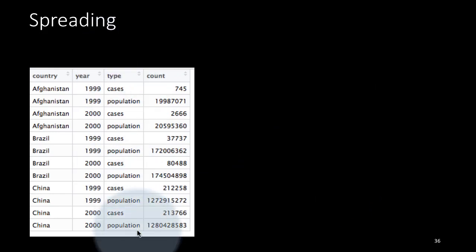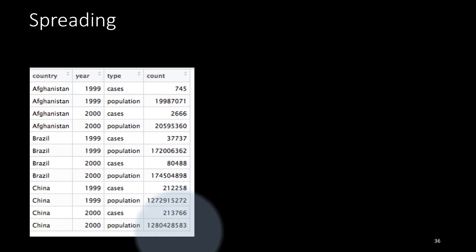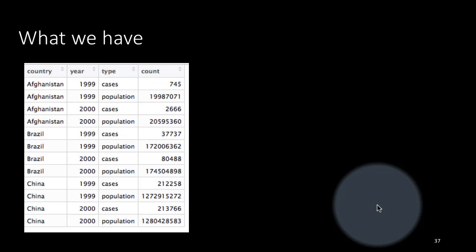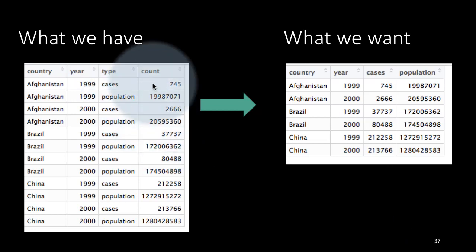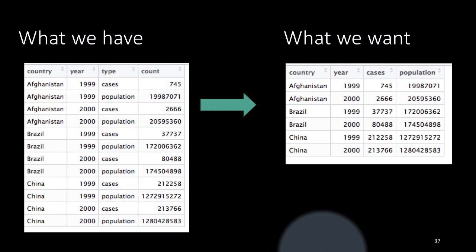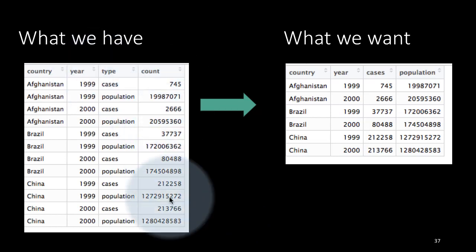Here we are taking an example with a column called type and a column called count. We would ideally like the count column to be in two different columns — one column called cases and another column called population. So we would like to take the data in this column and spread it across two columns called cases and population. The name of the function spread is quite intuitive because we are taking the data in one column and spreading it across two columns.